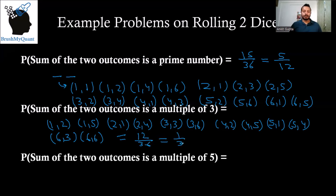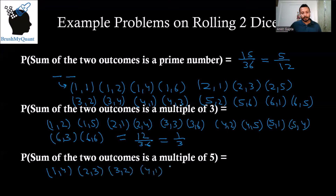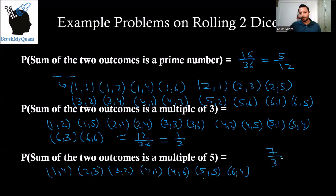What is the probability that the sum of the two outcomes is a multiple of five? The sum is between two and 12, and multiples of five in that range are five and ten. The favorable outcomes are: one comma four, two comma three, three comma two, four comma one, four comma six, five comma five, and six comma four — seven outcomes. So the probability is seven divided by 36.